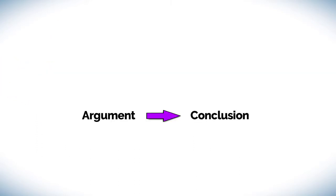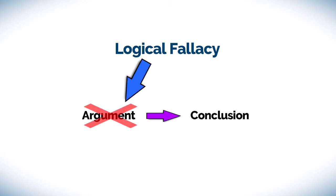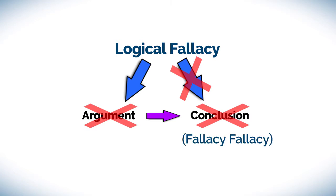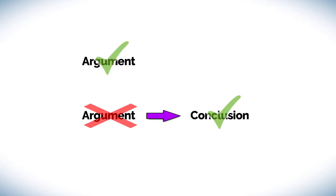It is important to note that a logical fallacy only invalidates the argument using it. It doesn't automatically prove its conclusion false. That's actually another fallacy in itself. The conclusion might in fact still be true, but we now need to find a valid argument without a fallacy to support it.